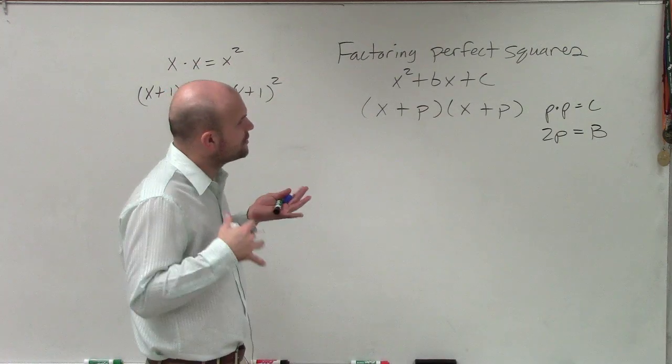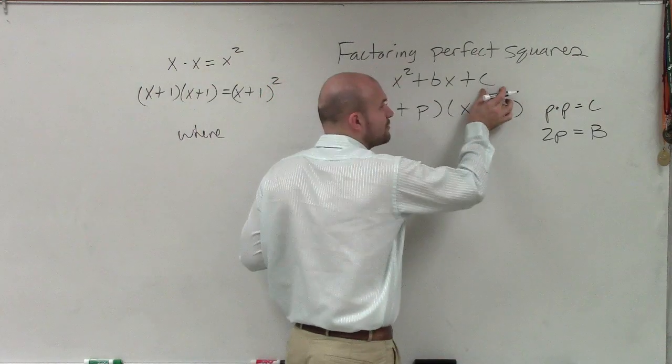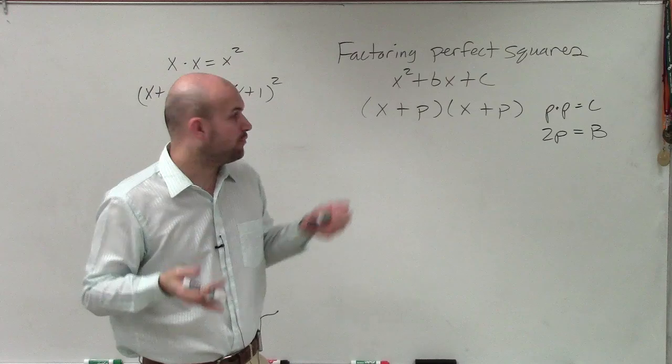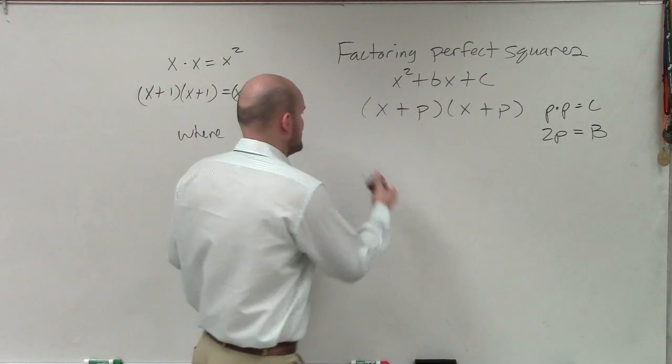So when we're looking into factoring a perfect square, what we want to be able to determine is, is our c a squared number? And is our b double of the square root of those numbers? And let's go and take a look at one.